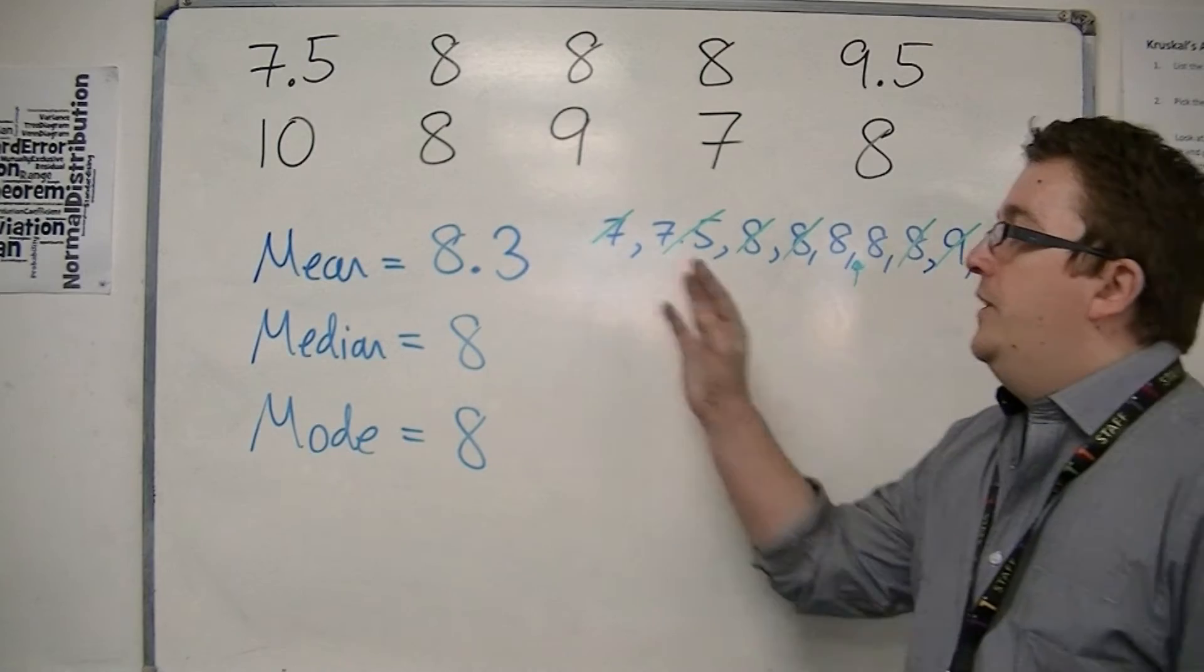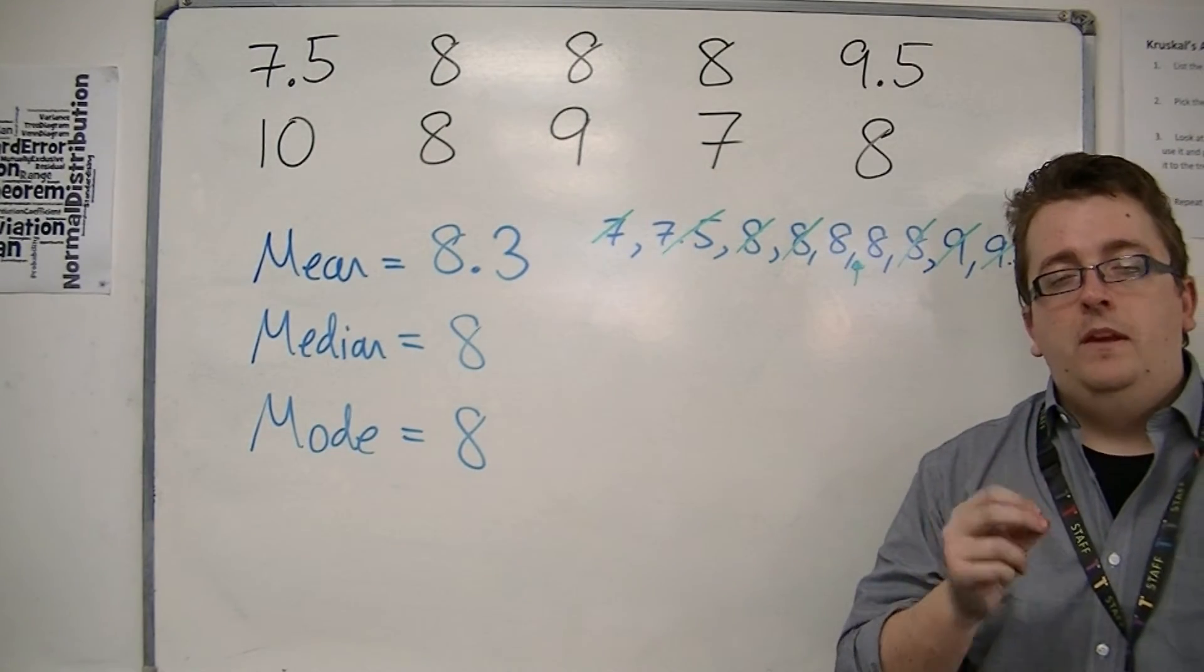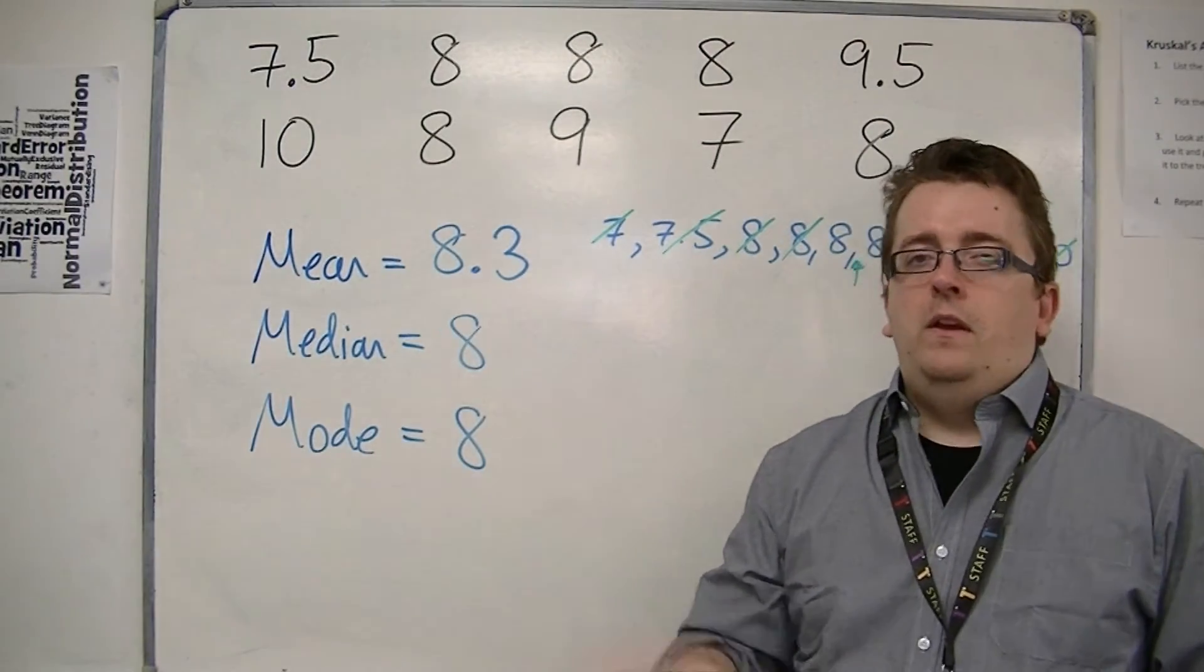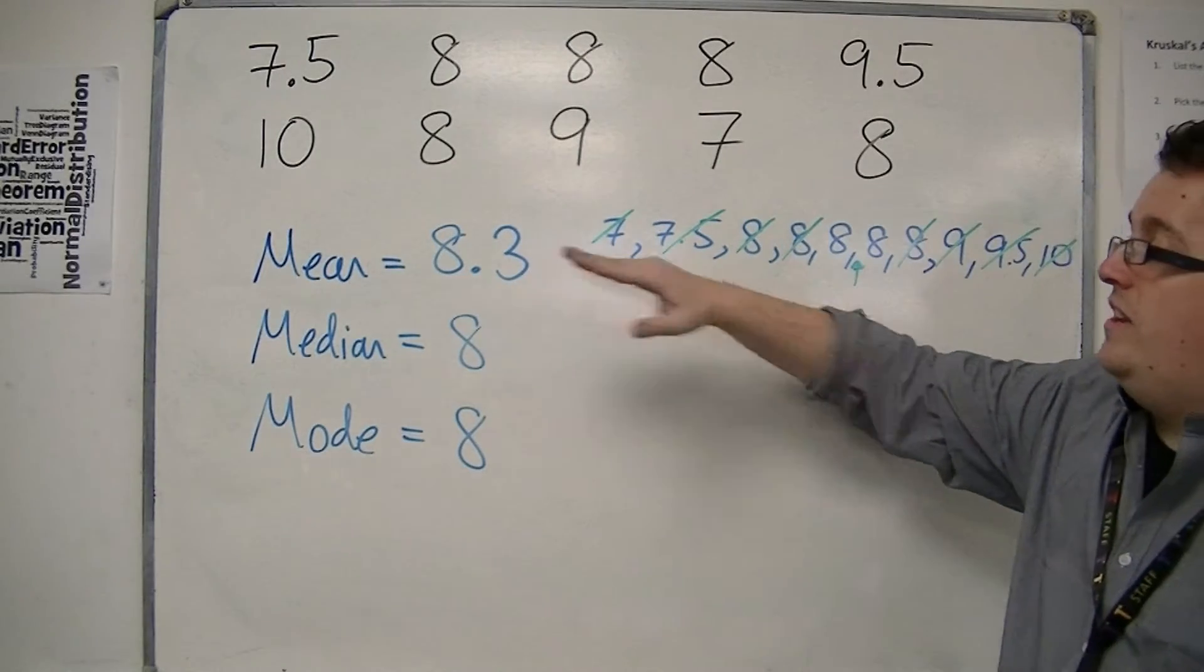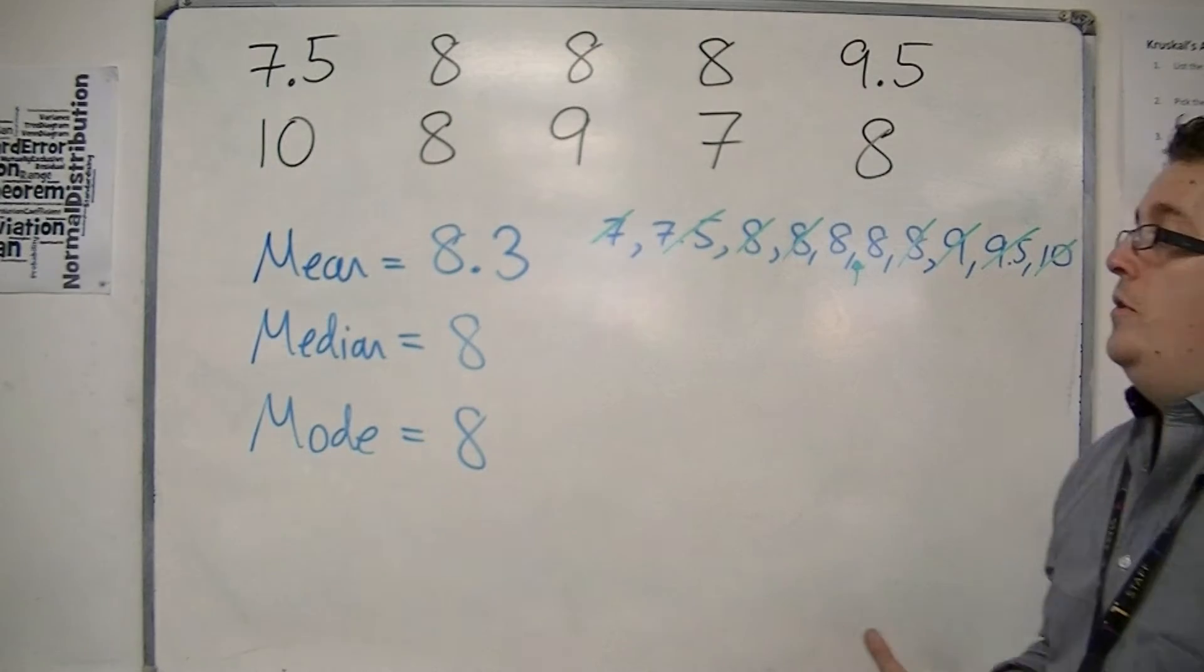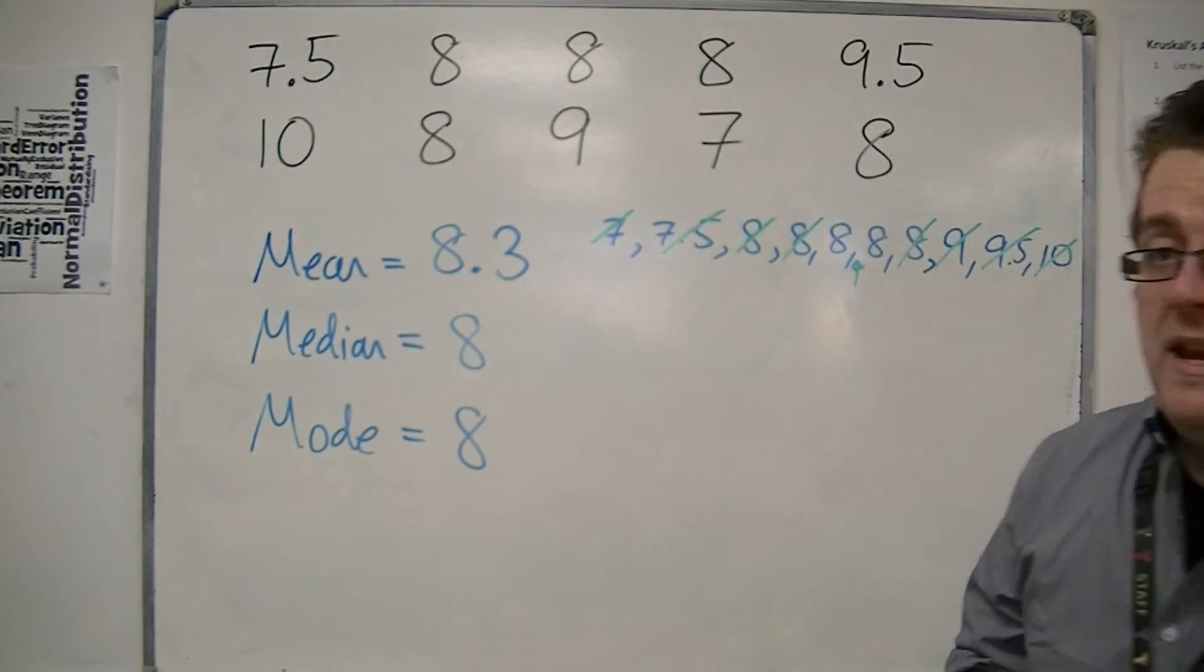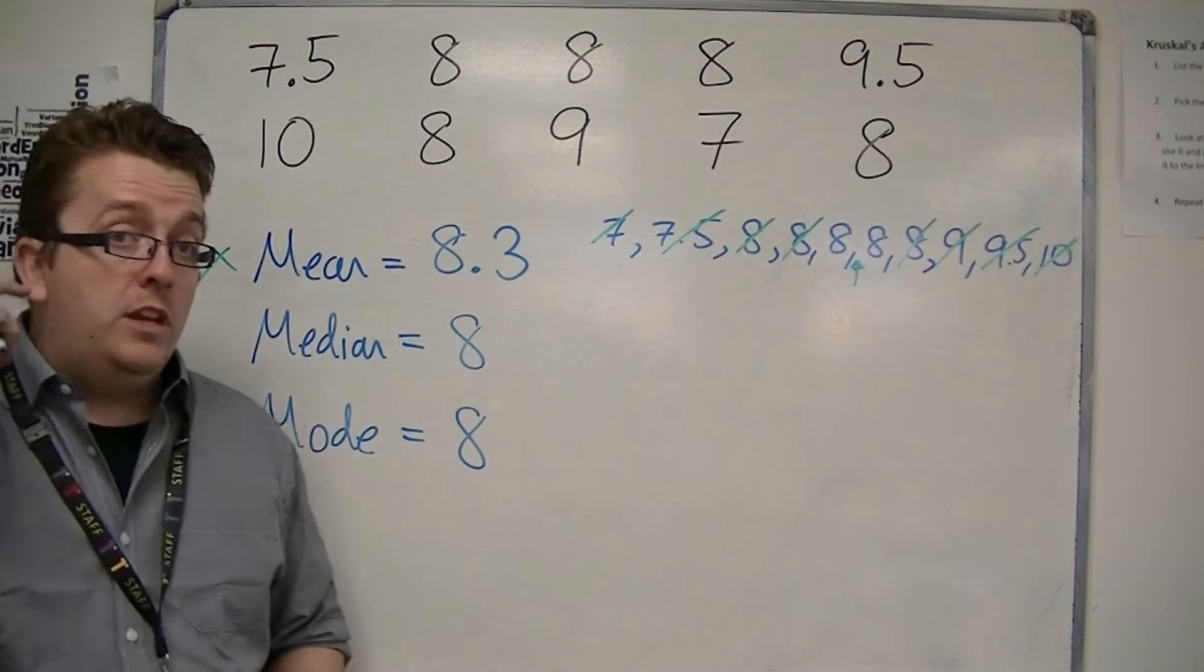And the mean has given us a shoe size of 8.3. Now, there is no shoe size of 8.3. So actually, because there is no shoe size of 8.3, this really doesn't help me a great deal. The 8.3 is really not telling me what I want to know. So in this case, the mean is not a very useful average to use.